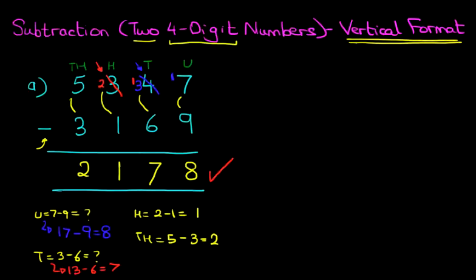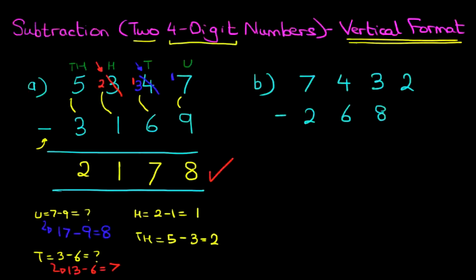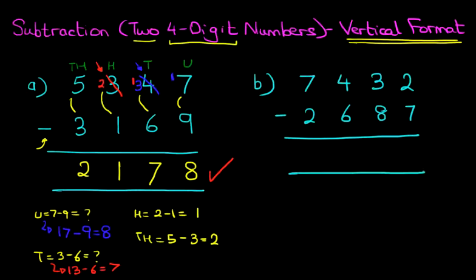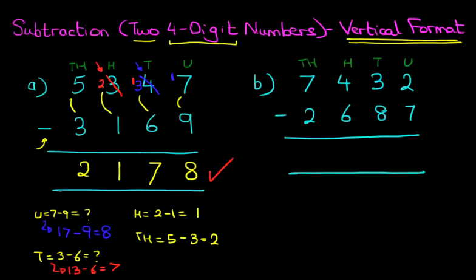Let's look at one more example. This time we have 7,432 minus 2,687. Now again, I'm going to label the columns. We've got units, tens, hundreds, and thousands. We are now ready to do the subtraction, so starting on the right-hand side.